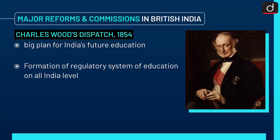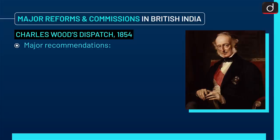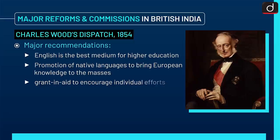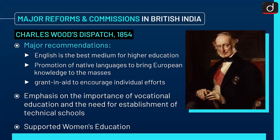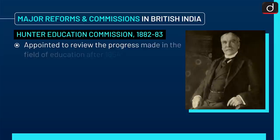Next is Charles Wood's Dispatch 1854. It was a big plan for India's future education, forming a regulatory system of education at the all-India level. It was called the Magna Carta of Indian Education. Major recommendations included English as the best medium for higher education, promotion of native languages to bring European knowledge to the masses, granting aid to encourage individual efforts, emphasis on vocational education and technical schools, and support for women's education.